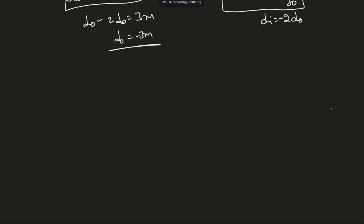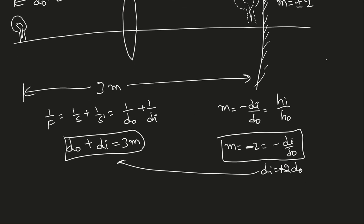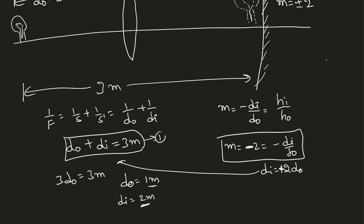Taking the magnification factor as -2: d-i = +2 × d-naught. Substituting into d-naught + d-i = 3: we get 3 × d-naught = 3 meters, so d-naught = 1 meter. Therefore the distance of the object equals 1 meter, and the distance of the image equals 2 meters.